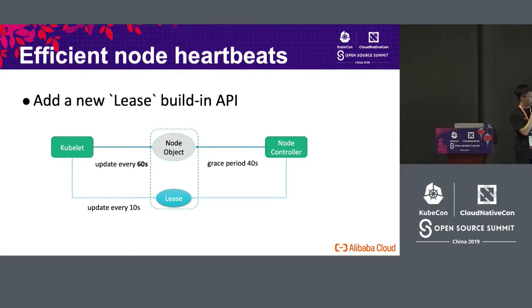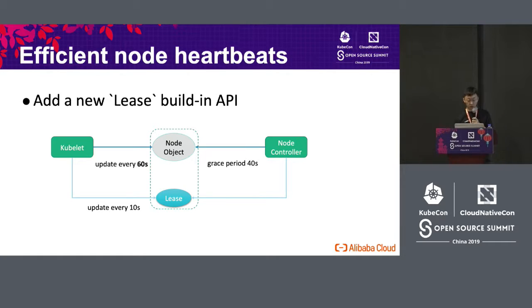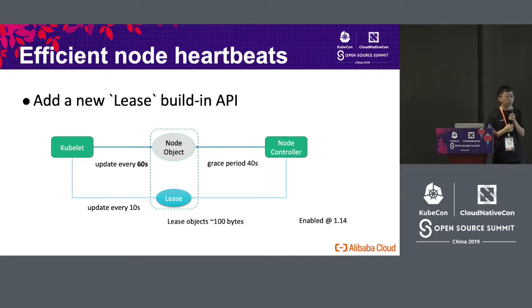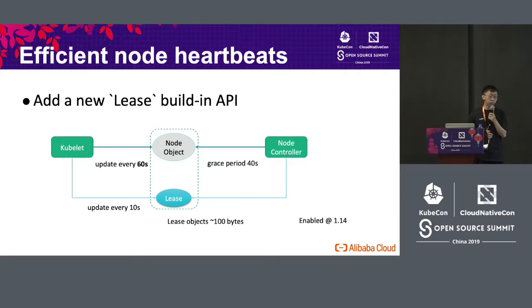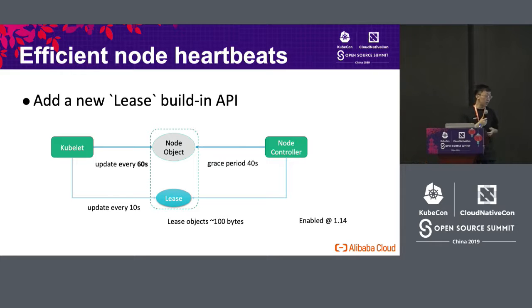With this lease, the detection cycle can be very short. One of the benefits of the lease object is that it is very small — about 100 bytes — and it is lightweight within ETCD, so the transaction load will be very small. This functionality is enabled in Kubernetes 1.14 by default. If you have some problems, you can check whether you can update to the 1.14 version.